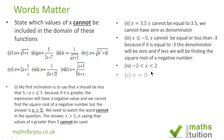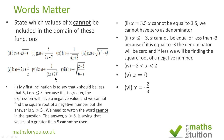For subsection 5, we say that x cannot be 0, because if x is 0, 1 over 0 is undefinable. So x cannot be 0. For subsection 6, we say that x cannot be minus 2 over 3, because if x is minus 2 over 3 it will produce minus 2 over 3. So x cannot be minus 2 over 3.